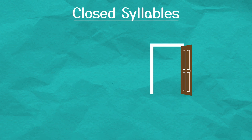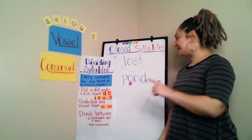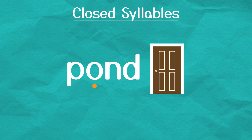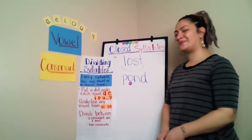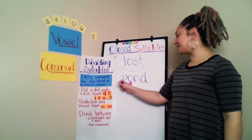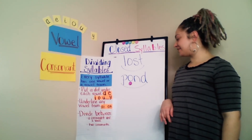Let's do our next word: P-O-N-D. Remember to put a dot under the vowels. I again only see one vowel, just one O. Since there's only one vowel, there's only one syllable. And there are consonants behind that vowel, which make this a closed syllable. So that O says its short sound again. P-O-N-D — what word? Pond. I think little turtle might've got lost at the pond.